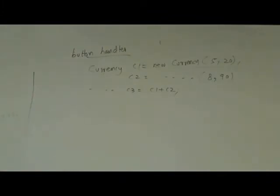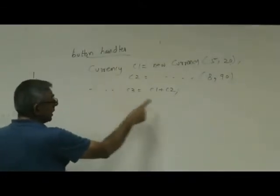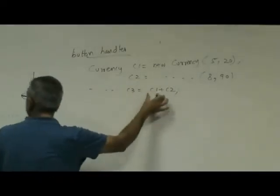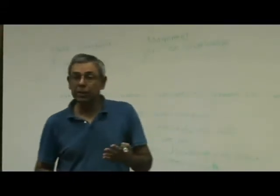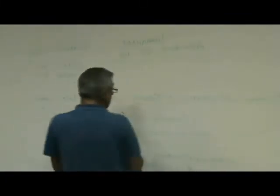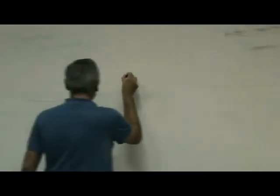Okay, so this is where the compiler checks what data type is C1. It will go back and see its currency. Then it will check what is C2. C2 is also currency, right? So then it will go to the currency class and see, was there an operator plus defined? Because remember, a computer can only do addition on integers or doubles, but not currencies, unless we define it. So then it goes to the currency class and says, oh, there is an operator plus. So that means this C1 will become left-hand side, this C2 will become right-hand side, okay?